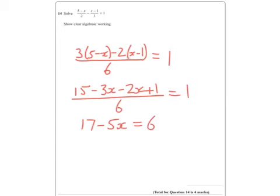Alright, so we then need to take away 17 from both sides, so minus 5x equals minus 11, and then divide by minus 5. So we end up with x equals 11 over 5, which is 2.2.